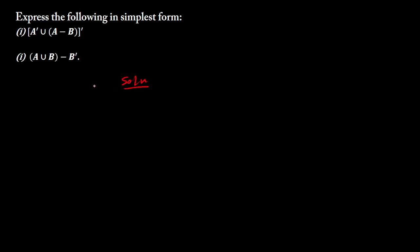Let's quickly get started. The first question says: express the following sets in simplest form. What we have been given is open bracket A complement union, then A minus B, close bracket, and lastly A complement outside. I'm going to multiply this complement by everything inside, so A complement times complement gives simply A.